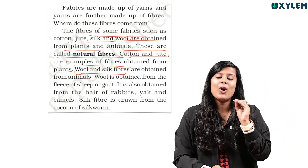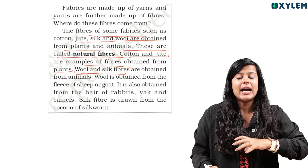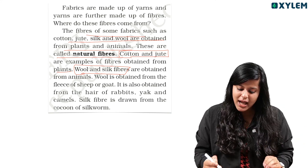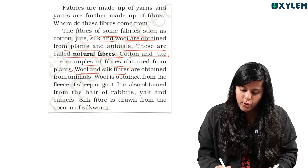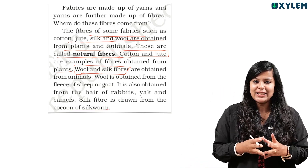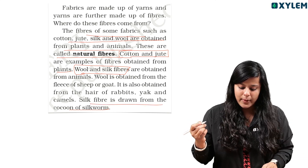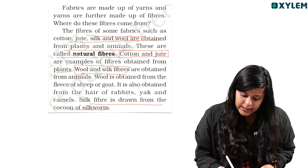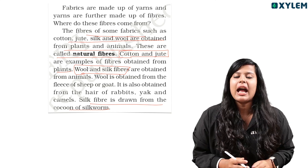Wool is obtained from the fleece of sheep or goats. Silk is obtained from the cocoon of silkworms. It is also obtained from the hair of rabbit, yak, and camels.